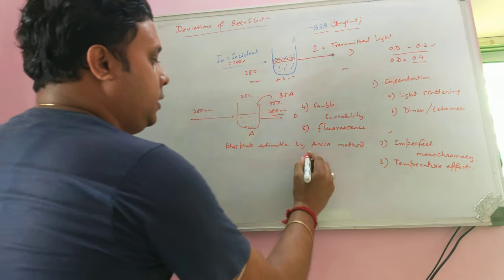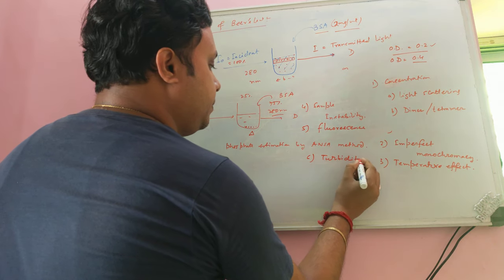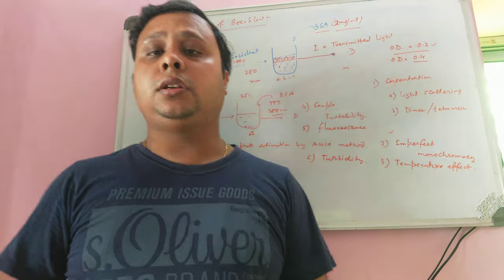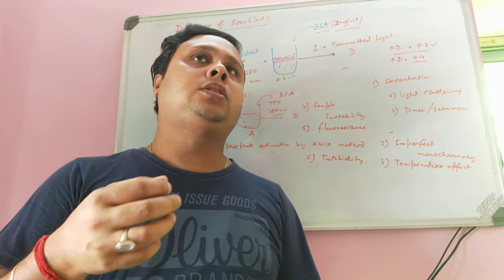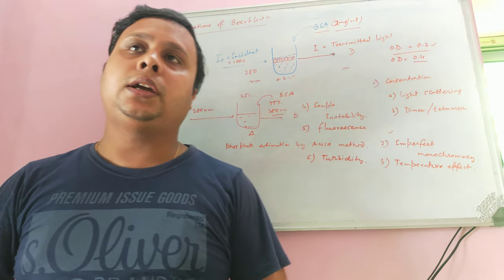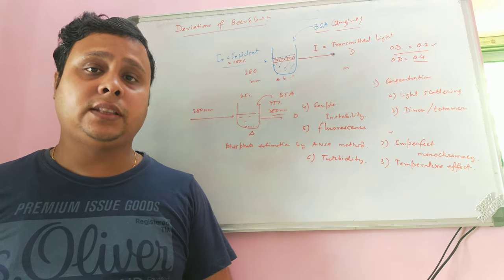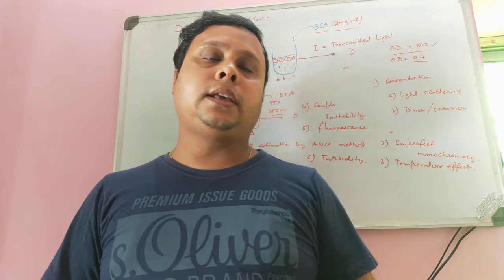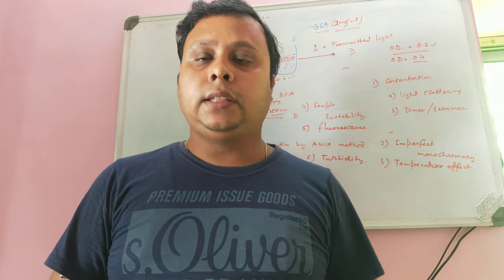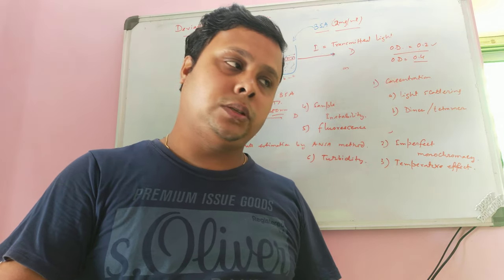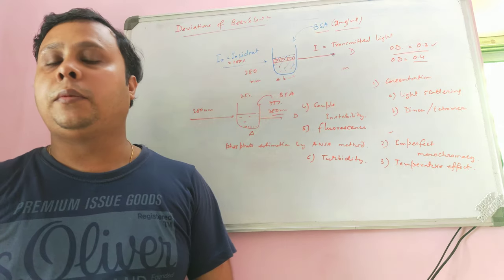The sixth deviation is turbidity. Turbid solutions will absorb more light than the native clear solution. For example, if bacterial cells are inoculated into a medium and turbidity develops, measuring cell number by turbidimetric method is complicated because not only bacterial cells are present, but also their metabolic waste products. The total OD measured will be far greater than the actual OD contributed by the cells alone.